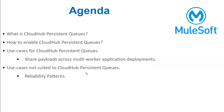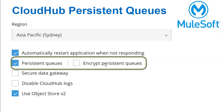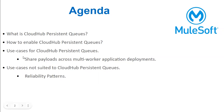How to enable this: as mentioned, this option is available per application. Go to Runtime Manager, navigate to your application, and on the settings page you can enable this option. There is also an encrypt option available on screen. This encrypt option can only be enabled if your subscription supports it — it is available from the Platinum tier onwards. So if you want encryption, you need to add it to your subscription.